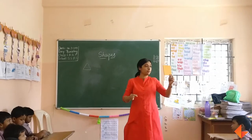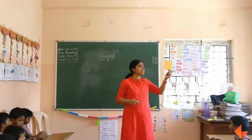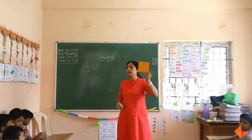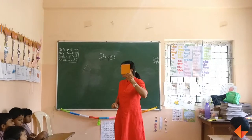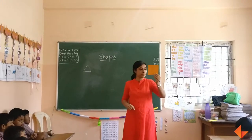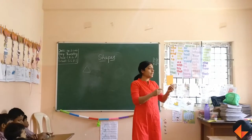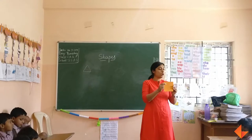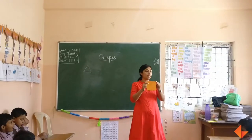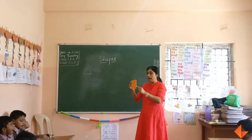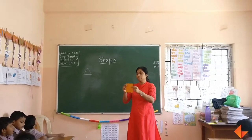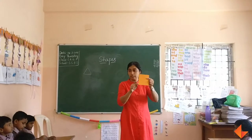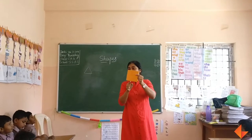Let's learn the next one. Which shape is this? Square. Okay, let's see how many sides there are. One, two, three, four.